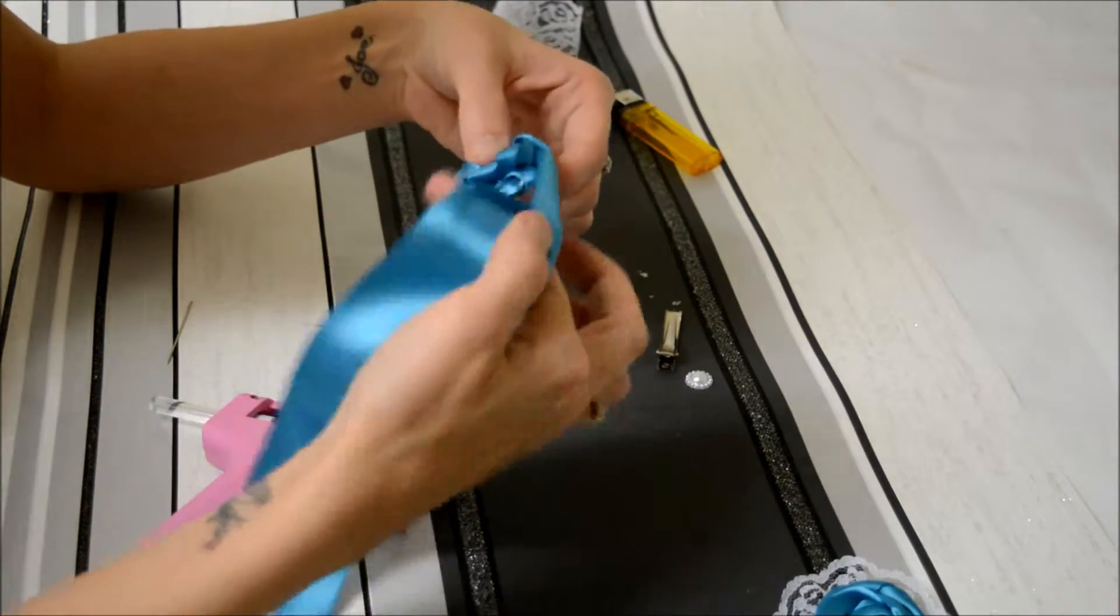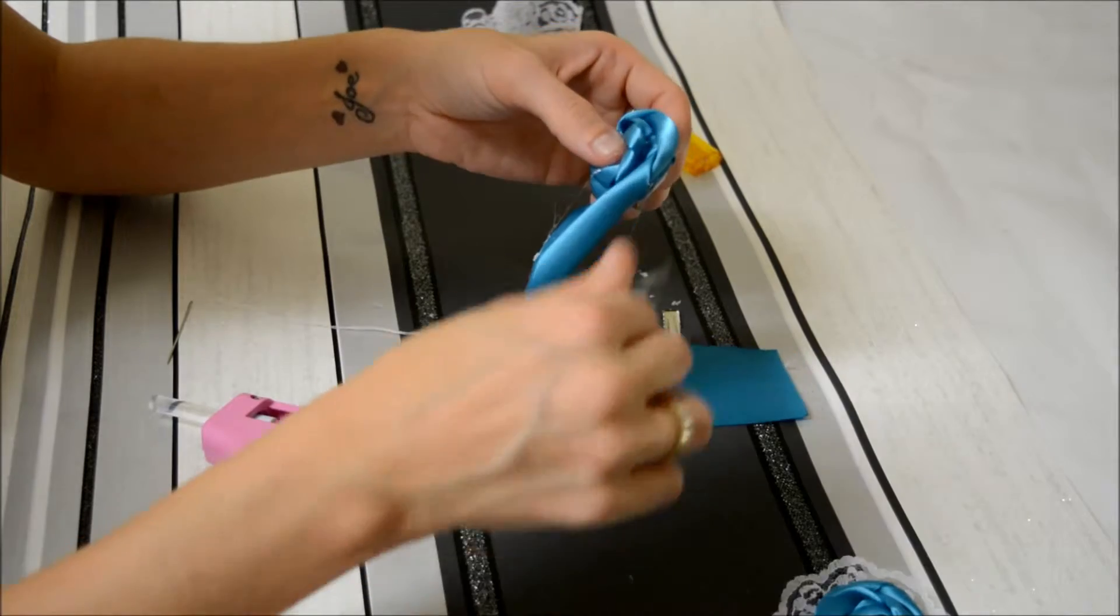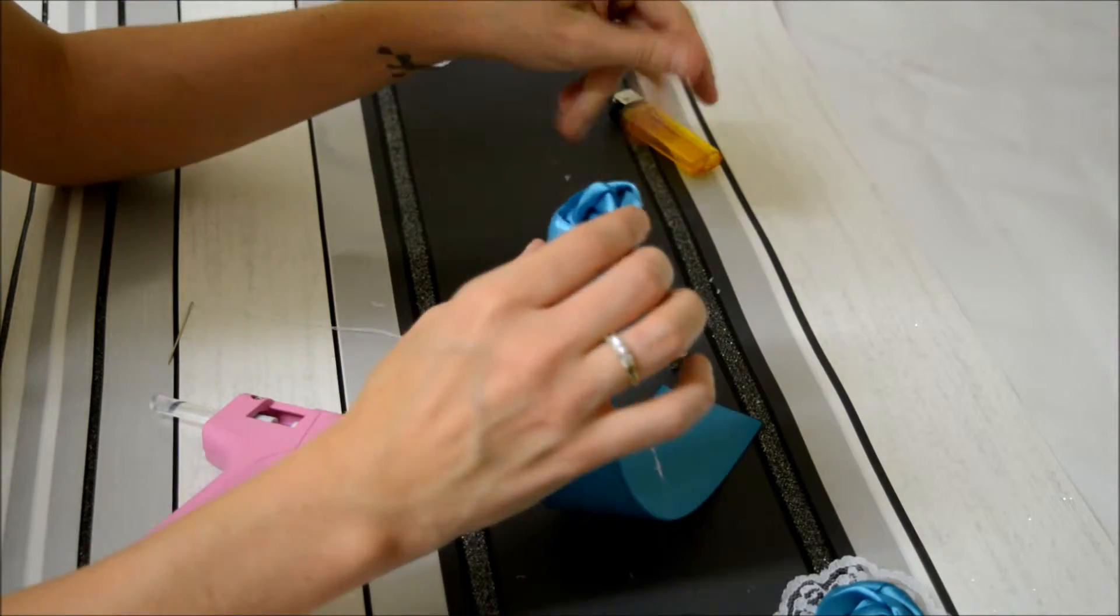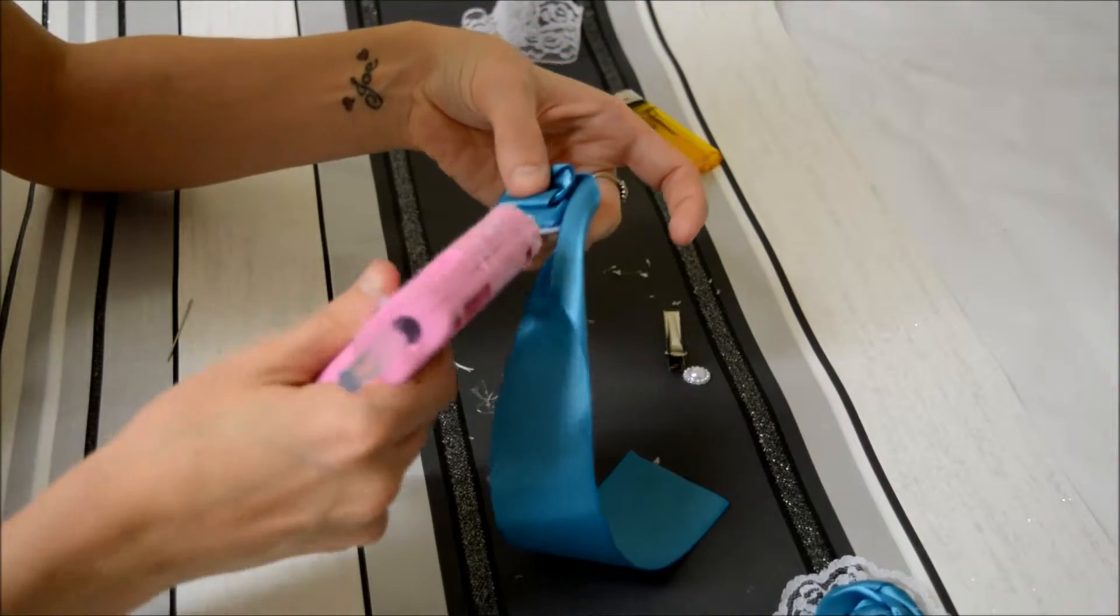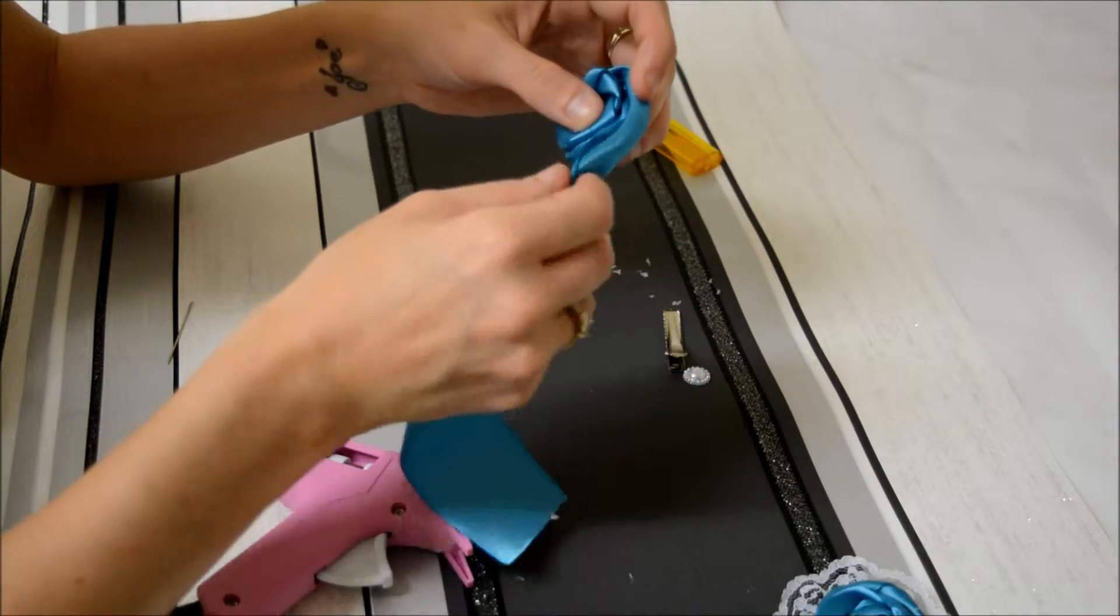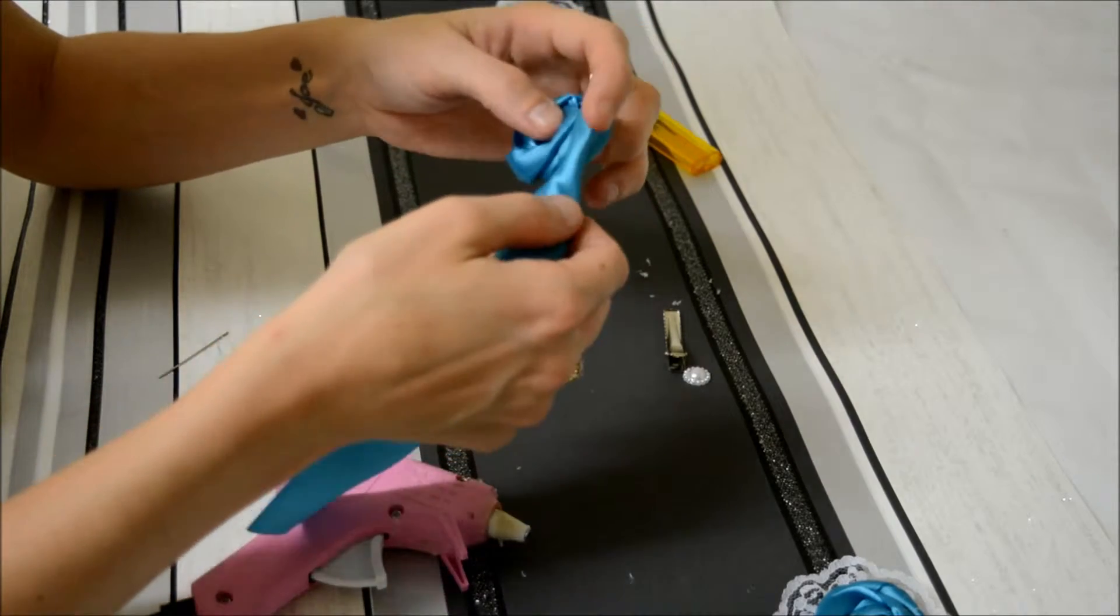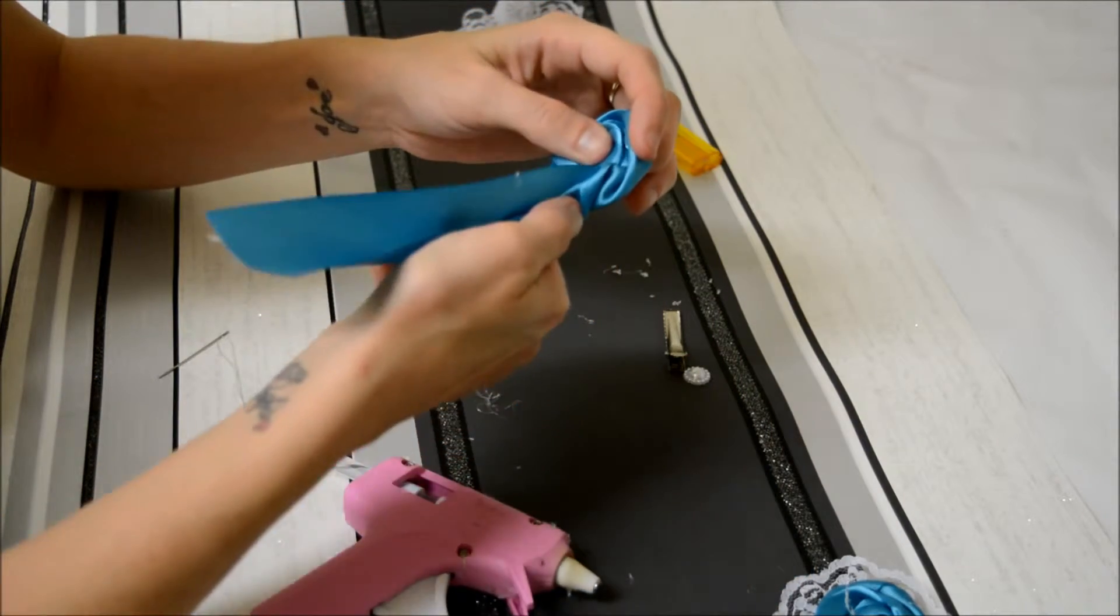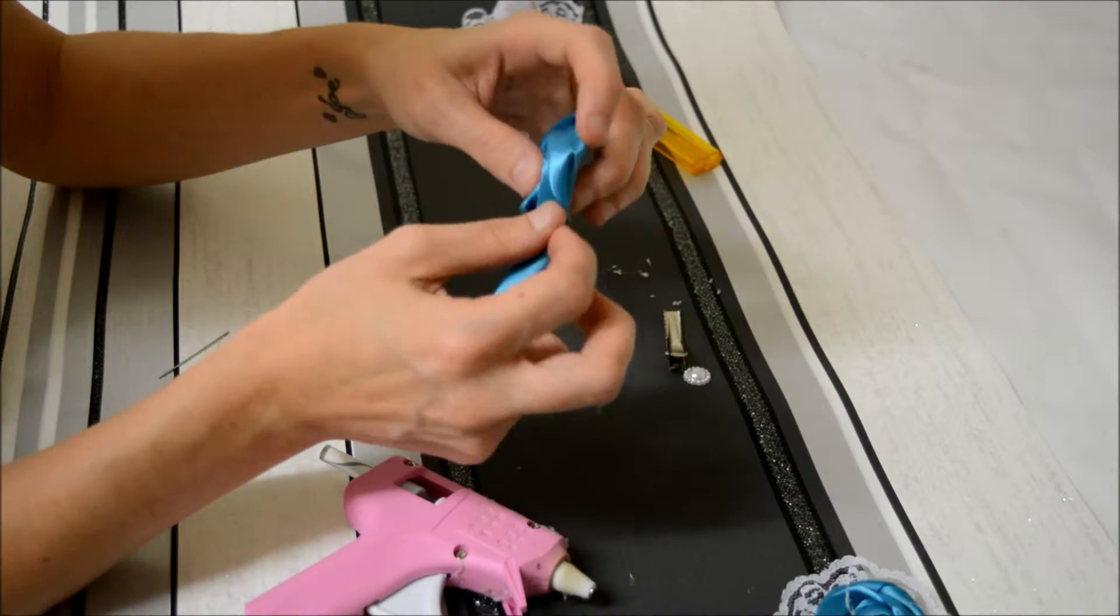Just keep twisting that round until you get to the end or until you want to cut any excess ribbon off.